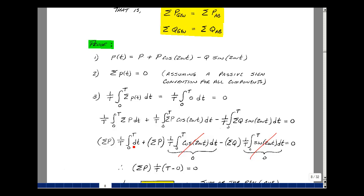Integrating 1 dt, I just get t, upper limit minus the lower limit. The t's cancel. And I'm left with the summation of the real power is equal to zero.